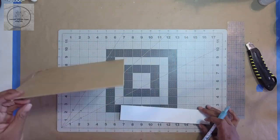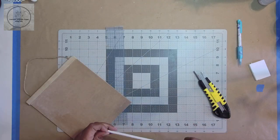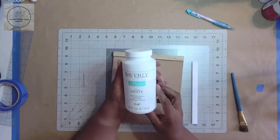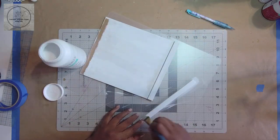Next I cut a piece of foam core to match the top piece that is already on the sign. Then I used Waverly chalk paint in white to paint all the pieces and set them aside to dry.